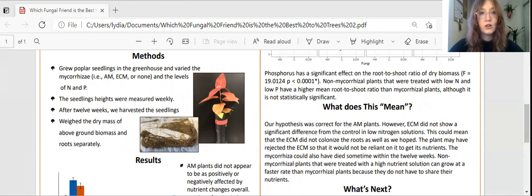The plant heights were measured weekly and after 12 weeks we harvested the seedlings. We separated the above and below ground biomass, cleaned and weighed them while they were wet and after they were dried.